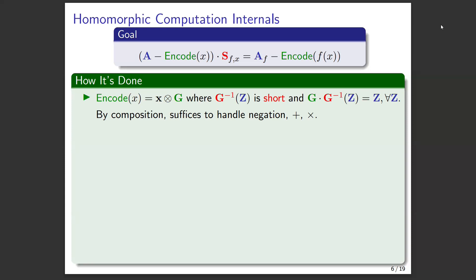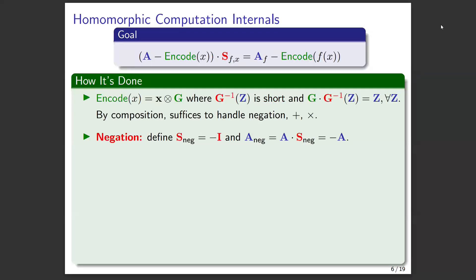Using composition, it's enough to handle basic addition, multiplication, and negation — from that you can build any circuit you like. Negation is very easy: define the short matrix S as the negative identity matrix, and A_neg as negative A. It's easy to verify the central equation holds, since minus encode(f) equals encode(negative f), which is the identity function.